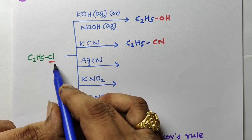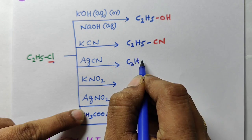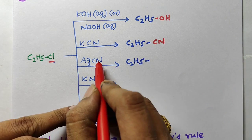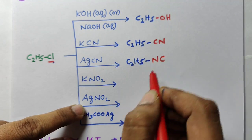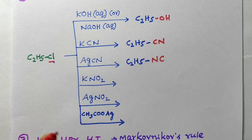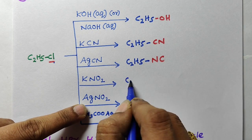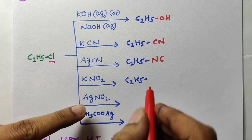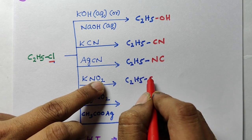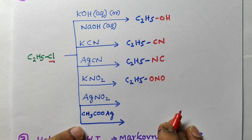Third: ethyl chloride treated with AgCN. In this case, nitrogen is the attacking group, so NC attacks — isocyanide is formed. Next: KNO2, when it reacts with ethyl chloride, oxygen is the attacking atom, so ONO is formed — ethyl nitrite is formed.